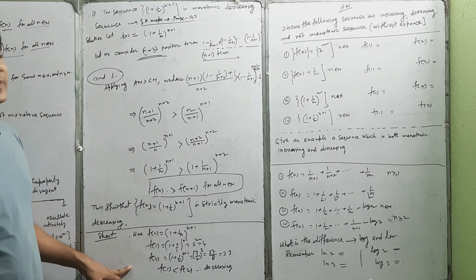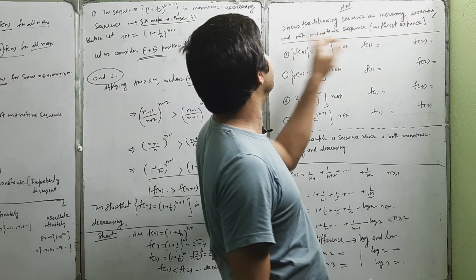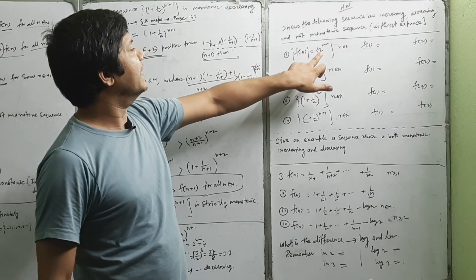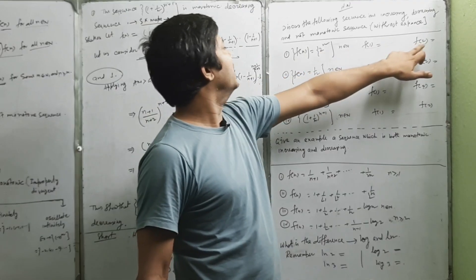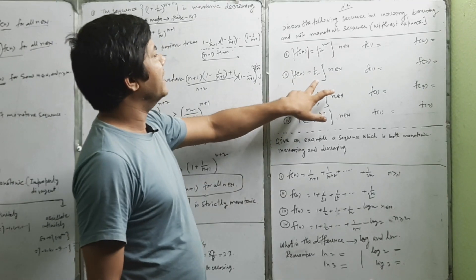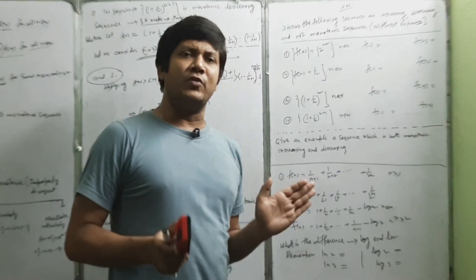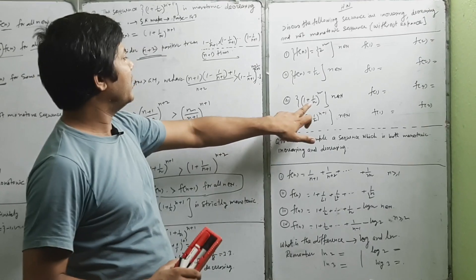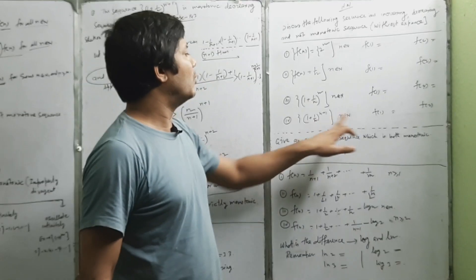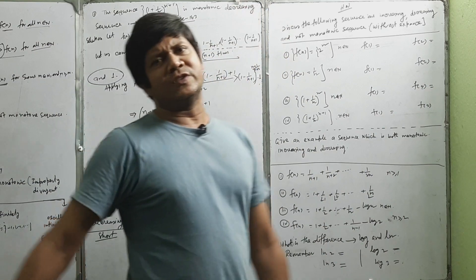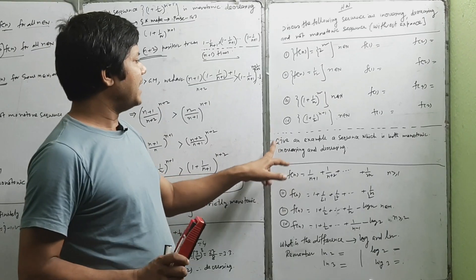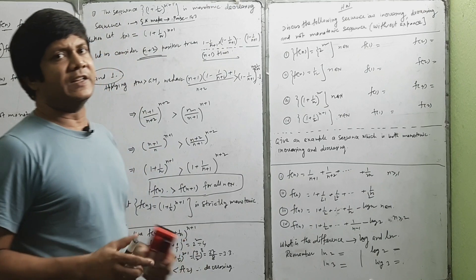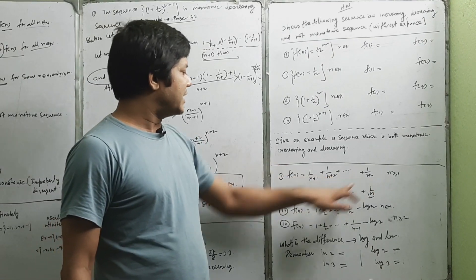You must be able to follow this logic. Discuss the following sequence: increasing and decreasing. F1 is 1, F2 is 1. If f1 is 1 then it is decreasing; if f1 is 1 then it is increasing. Give an example of a sequence which is both monotonic increasing and decreasing.